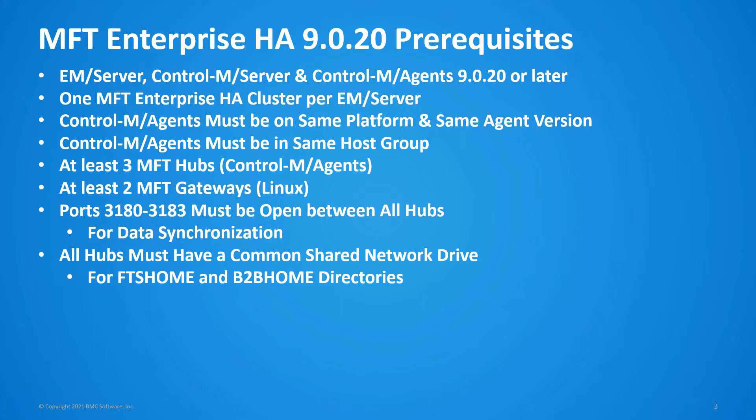You will also need to create a host group and add all the Control-M agents involved in this MFT Enterprise HA cluster to that host group. In terms of number of MFT hubs and gateways, our recommendation is to have at least three hubs and two gateways. MFT gateways can only be installed on a Linux server.